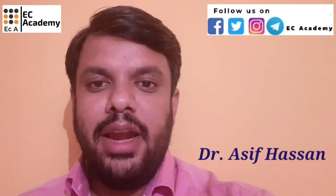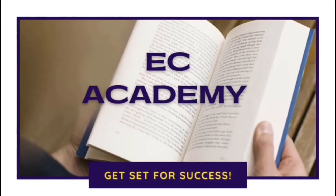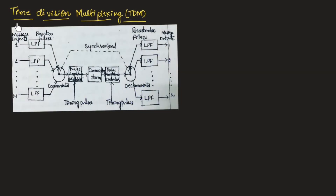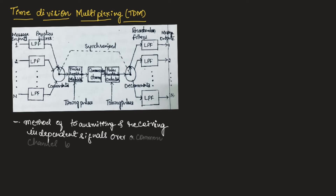Hello friends, welcome to ESA Academy. In this lecture, let us understand time division multiplexing, which is TDM in communication systems. Time division multiplexing is a method of transmitting and receiving independent signals over a common channel by means of synchronized switch.